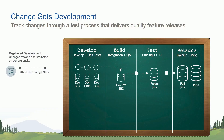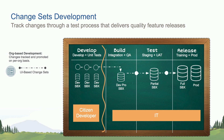So we're going to start by talking about change set development. This is our traditional change set development model where you're doing development in a sandbox, creating change sets through our setup UI and moving that change set through the various test environments and into production. When we talk about how to incorporate both citizen developers and IT in a model like this — the citizen developer does development in a sandbox, creates an outbound change set through the UI with the changes they've made, and then IT picks up and moves that change set through a test environment, maybe through UAT, does the validation, and moves it all the way through to production.